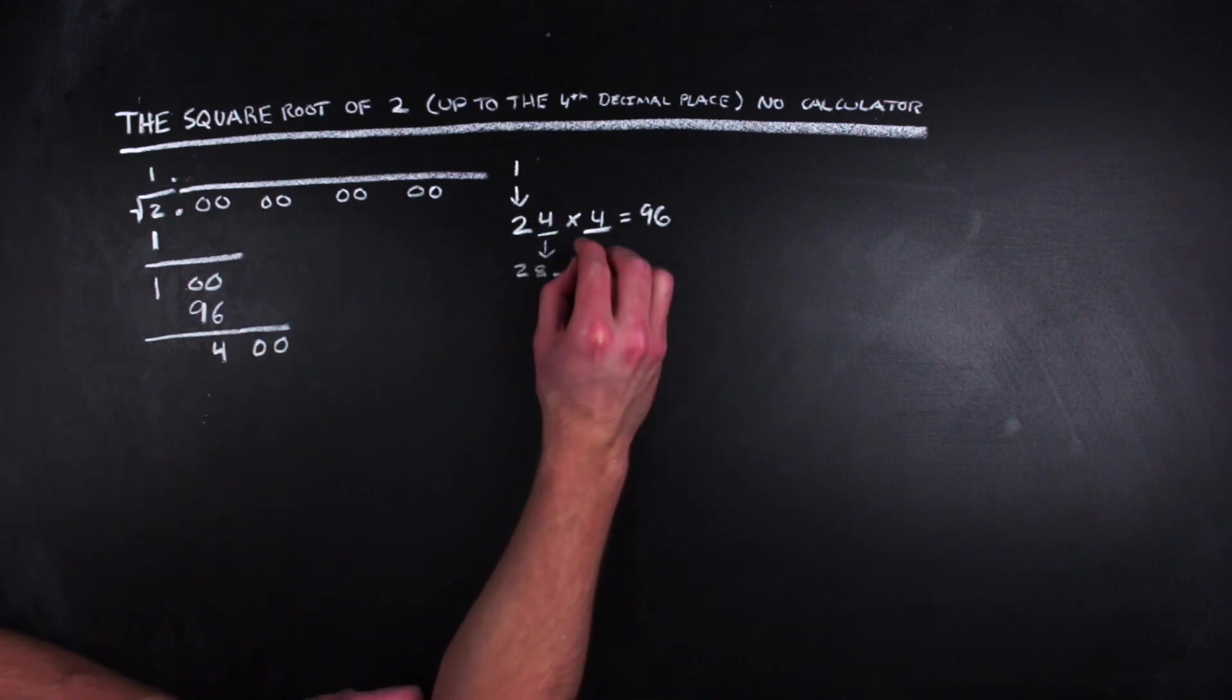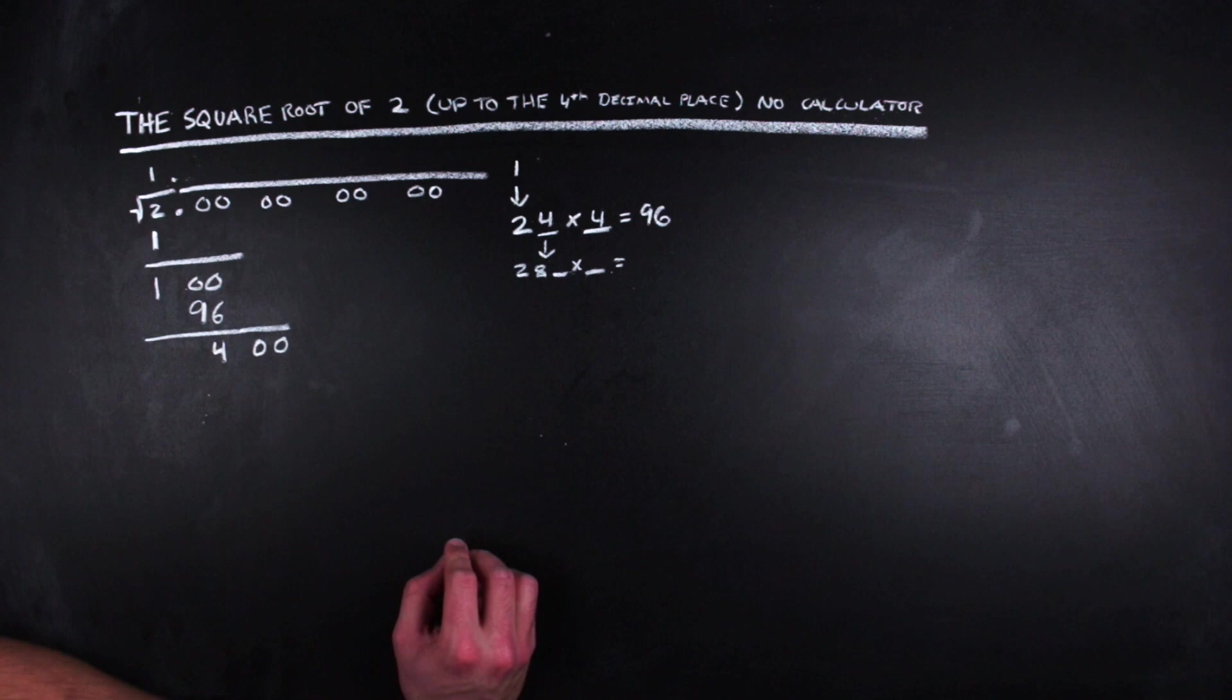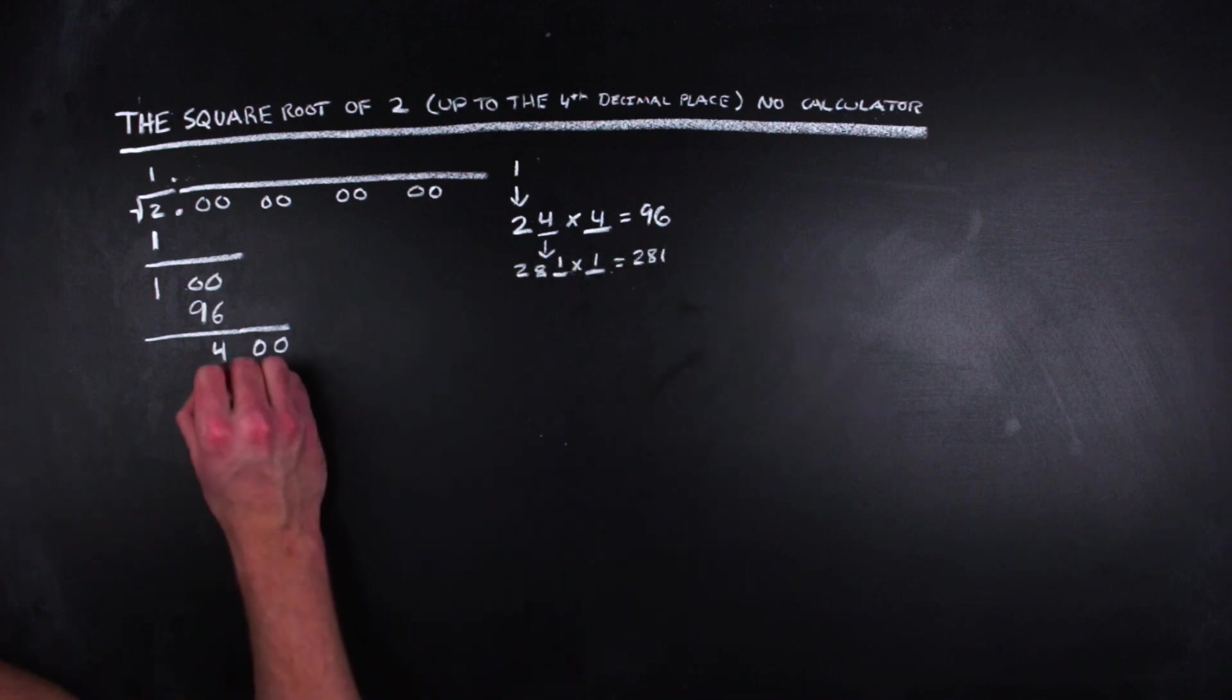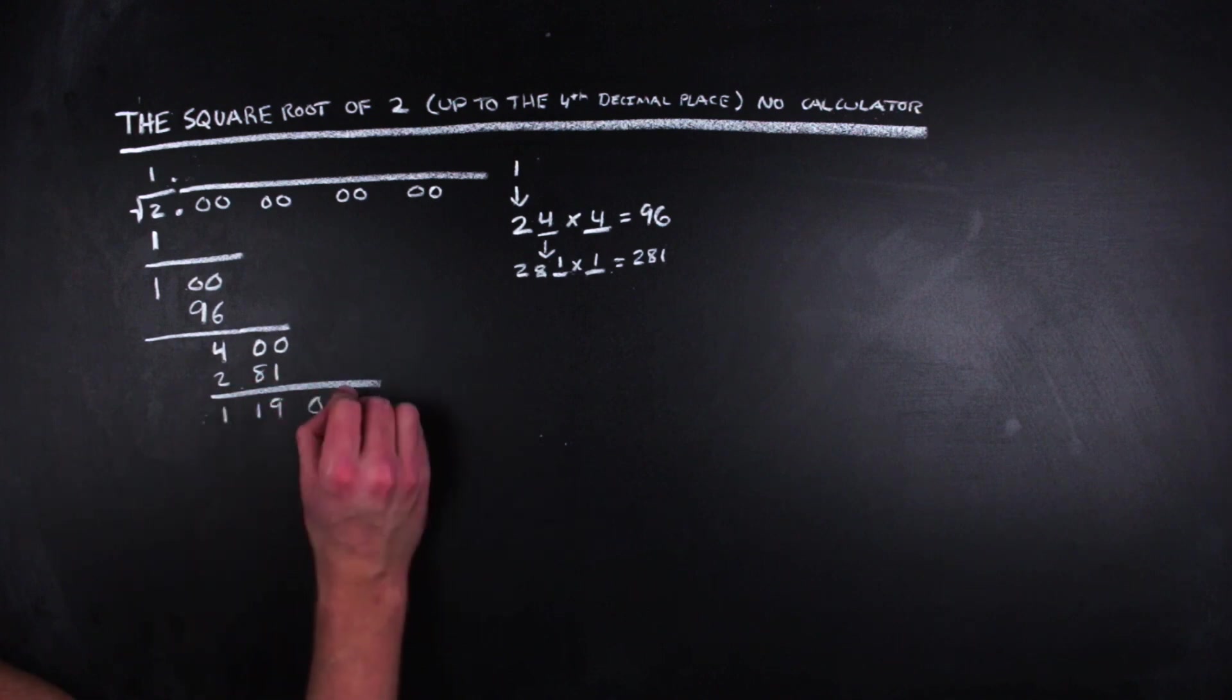In the next step, we pull down and double the four that we inserted in the last step and we create the new computation with blanks to be evaluated. Here, one gets us closest to 400 with the computation yielding 281. Plugging that into the long square root, we get 119 left over and pull down the next two zeros.